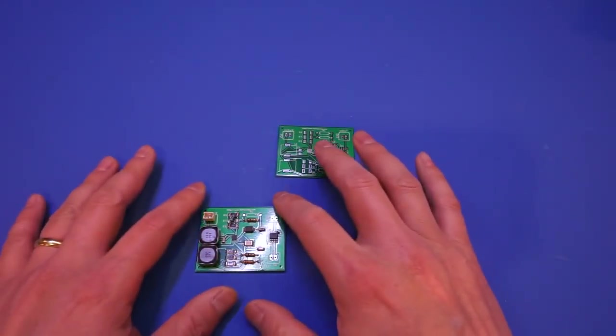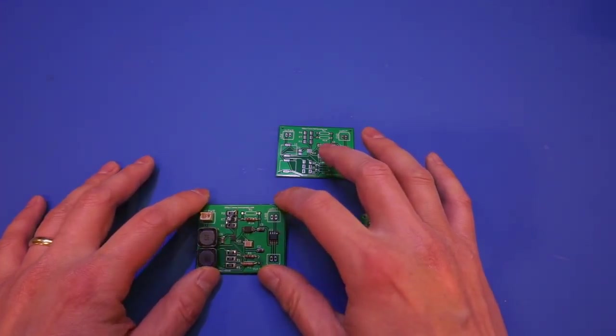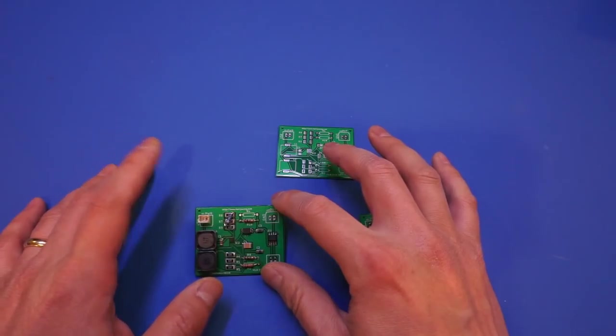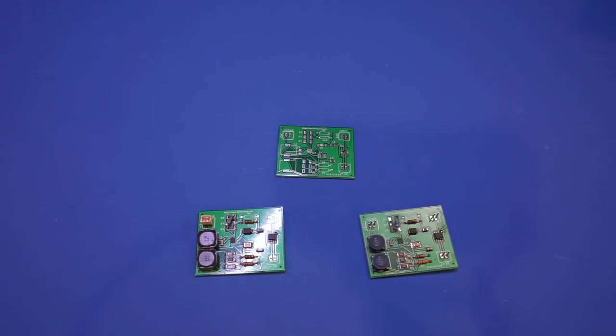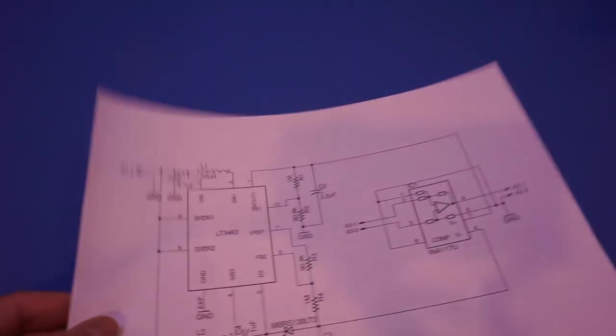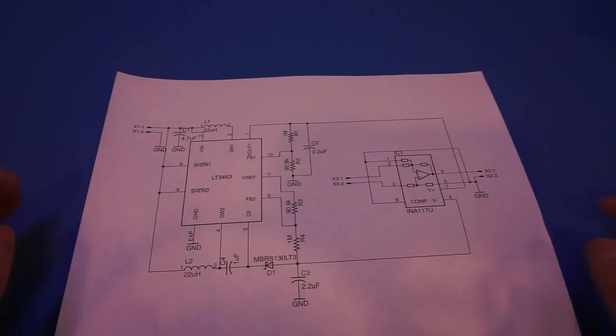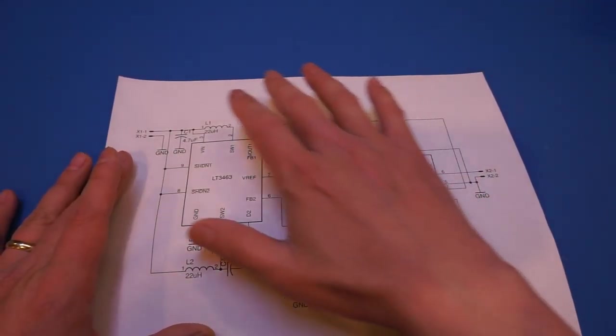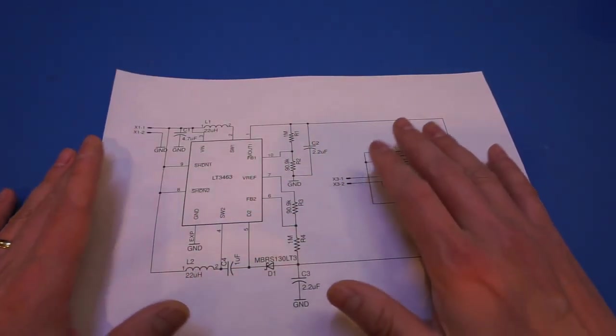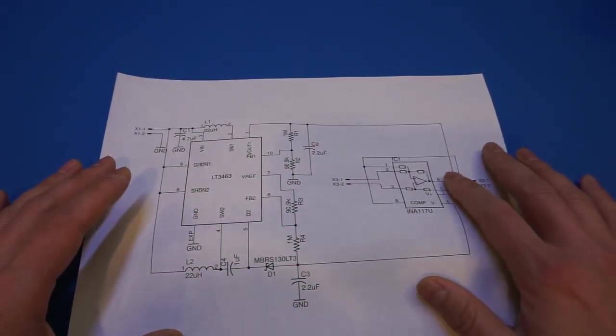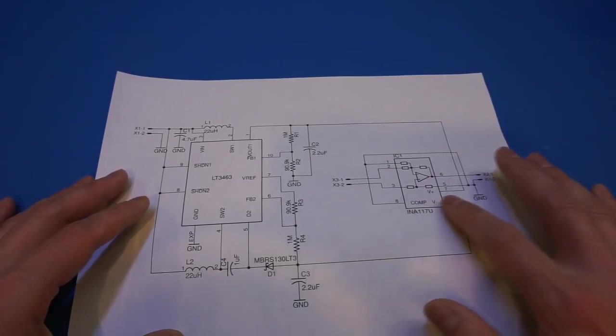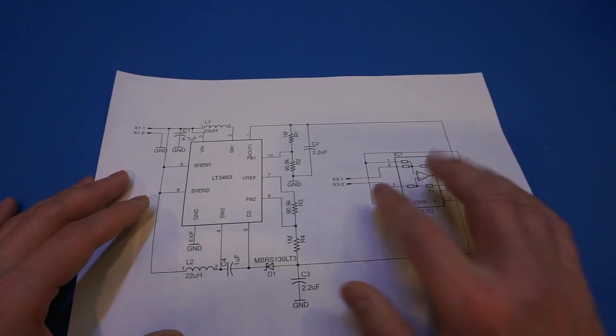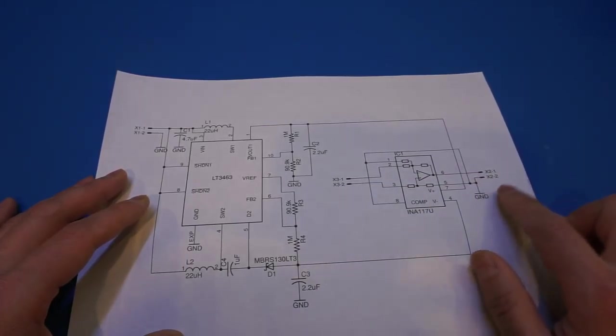This board I made here is a simple differential amplifier based on Texas Instruments INA117 High Common Mode Voltage Differential Amplifier Chip. In fact, the circuit here is very simple. And as you can see here in the schematics, it basically just consists of a DC to DC converter circuitry that provides the plus and minus 15 volts needed by the amplifier chip and the INA117 chip itself, which is a unit gain amplifier which essentially converts the differential input into a single-ended output.